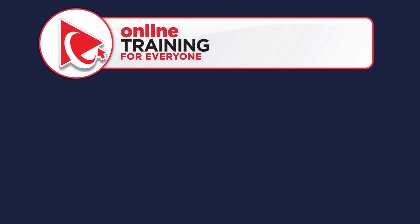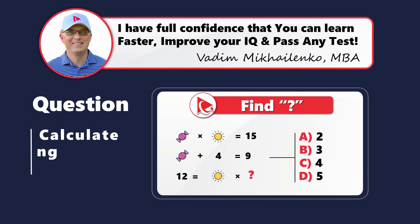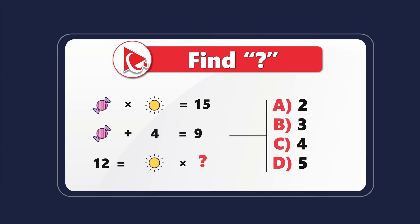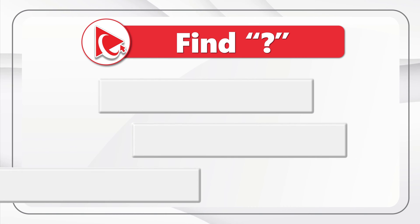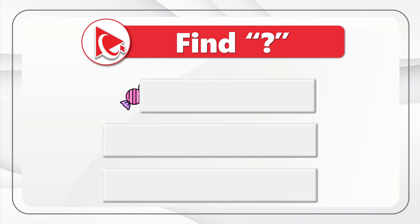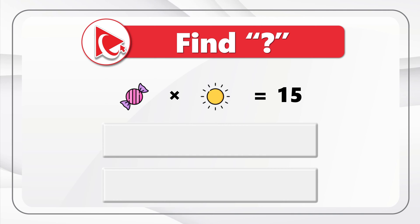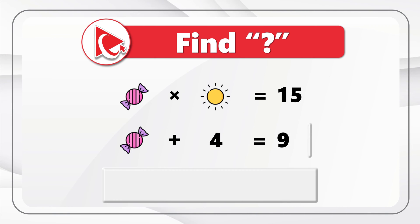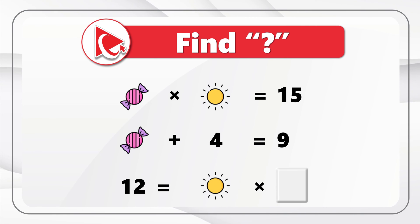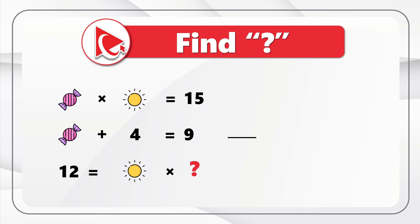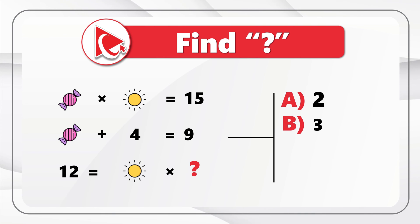I love this question because it is used very frequently to test your analytical skills and business math skills. You're presented with three expressions: the first is candy multiplied by sun equals 15, the second is candy plus four equals nine, and the third is 12 equals sun multiplied by question mark. You need to find this question mark and select out of four possible choices: choice A 2, choice B 3, choice C 4, and choice D 5.